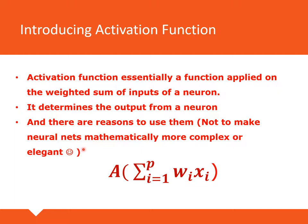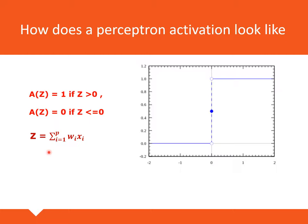So why are we introducing something like an activation function? We are saying that the output from every neuron will not just be the weighted combination of the input features, but will be some function of that weighted combination — and that function we are calling the activation function. The reason we are doing this is not merely to make things mathematically more complex; there are other more practical reasons which we will find out soon.